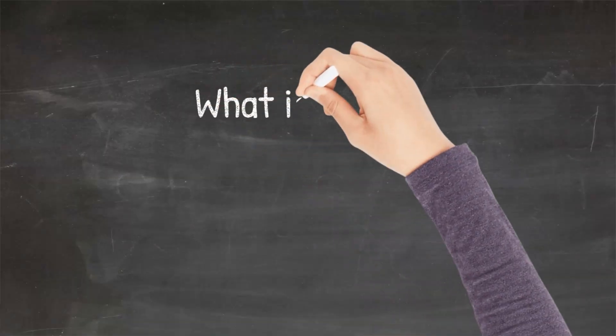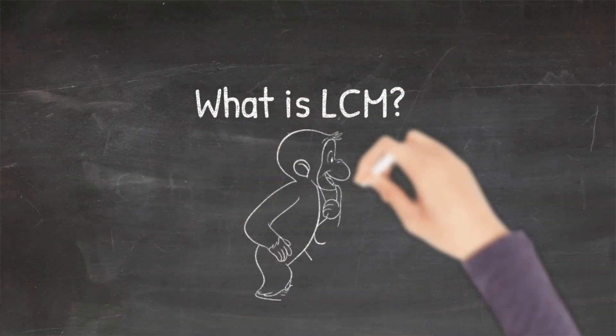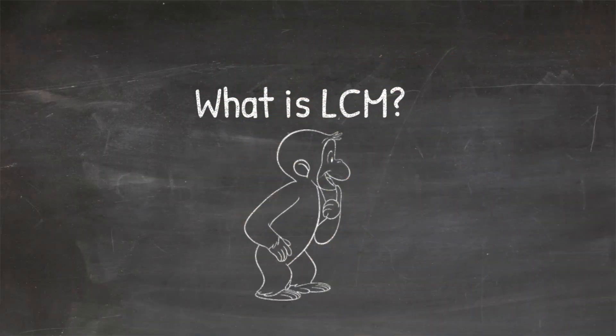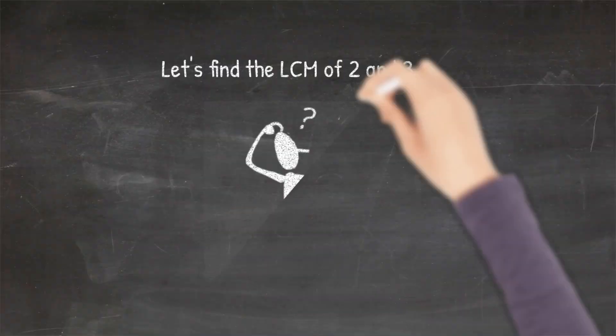But before moving on to that, we need to know what is LCM, because without that we cannot go on to addition and subtraction of fractions. So let's quickly review what is LCM. LCM, or Least Common Multiple, is the smallest multiple which is common amongst all the multiples of the given numbers.